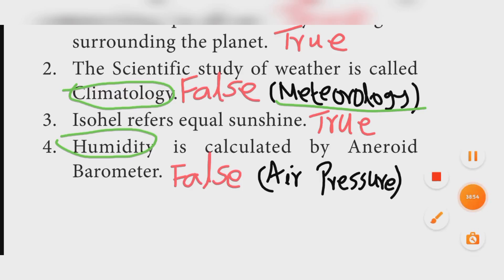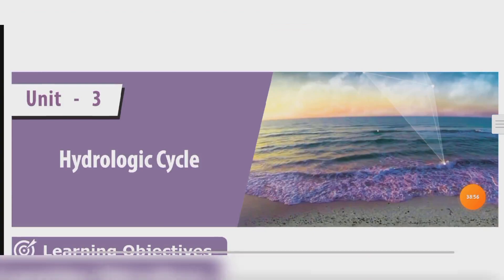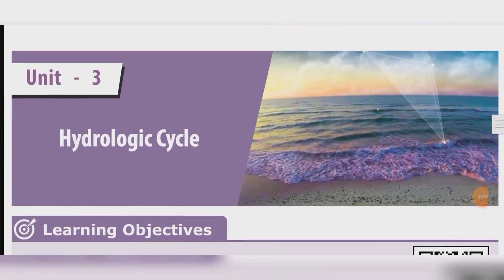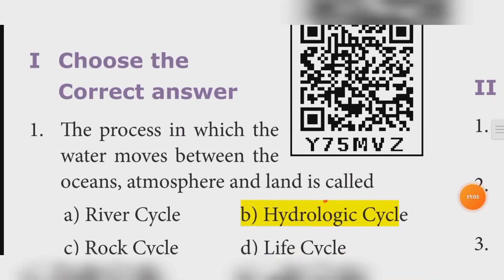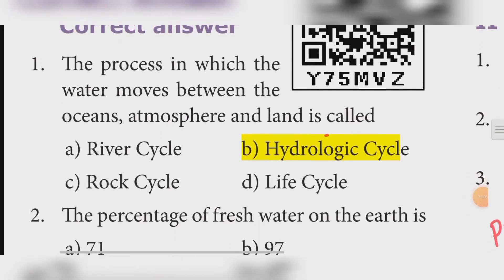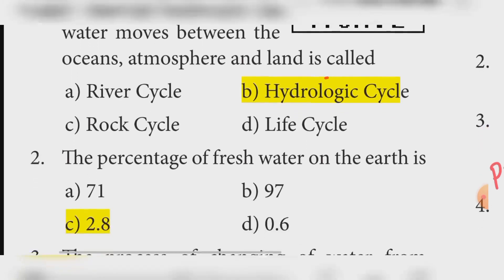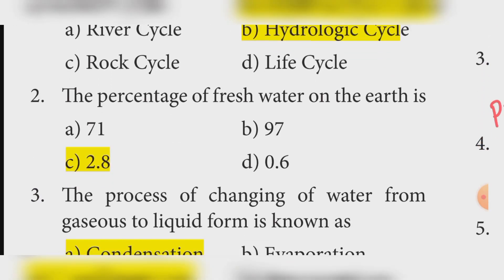Unit 3, Hydrologic Cycle. Choose the correct answer. First: The process in which the water moves between the oceans, atmosphere, and land is called? Answer: Option B — Hydrologic cycle. Second: The percentage of fresh water on the Earth is? Answer: Option C — 2.8%.